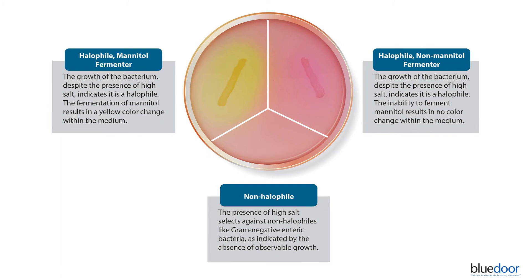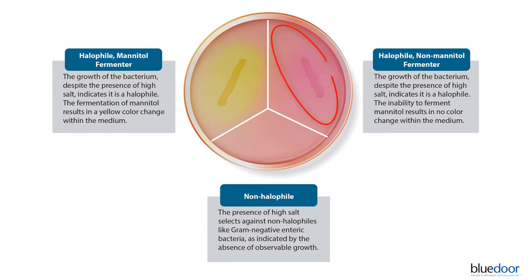As we can see, individual members of Staphylococcus, like the mannitol-fermenting pathogen Staphylococcus aureus, are isolated and differentiated from other non-pathogenic staph, like Staphylococcus epidermidis, using mannitol salt agar.